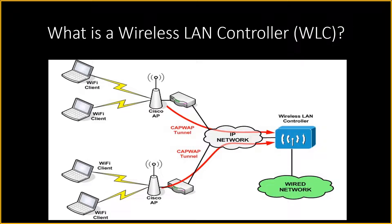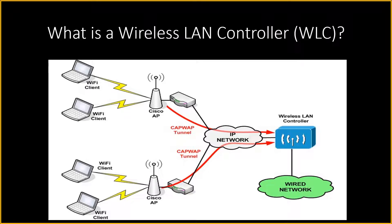While deploying enterprise wireless LANs, every single wireless access point is initially created and managed separately from other access points on the same network. In other words, each access point must run individually, which makes centralized management difficult to realize. Unfortunately, technical problems and unstable network conditions can be caused by lack of communication within these access points.